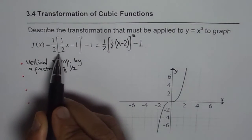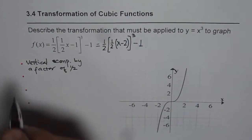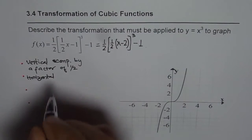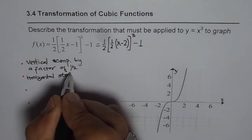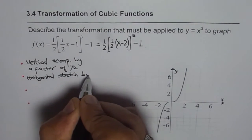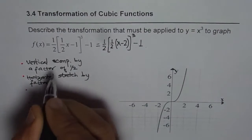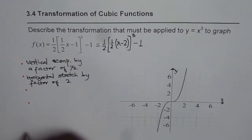Now the second one is, inside the brackets it is always horizontal. So it is horizontal stretch by factor of 1 over k, so it is factor of 2.